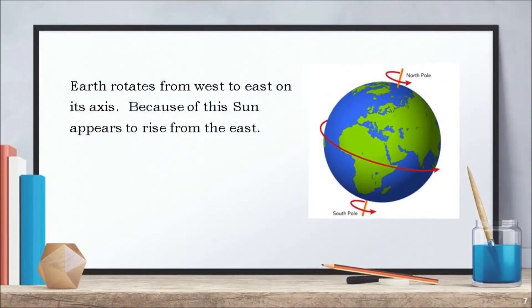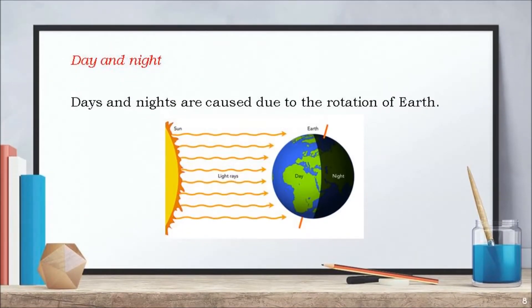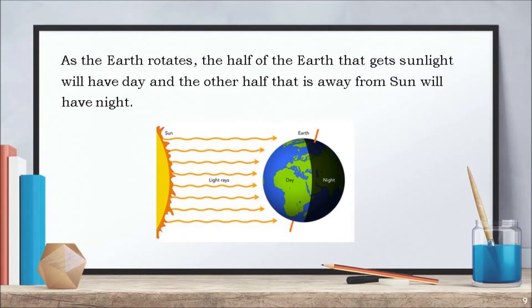Earth rotates from west to east on its axis, and because of this, the sun appears to rise from the east. We have days and nights on earth because of the rotation of earth. As the earth rotates, the half of the earth that receives sunlight will have daytime, and the half of the earth that is away from the sun will have night.